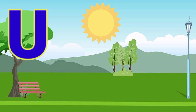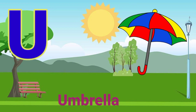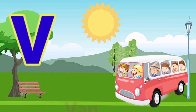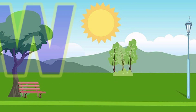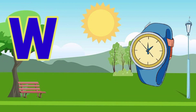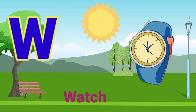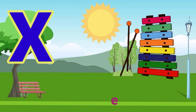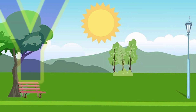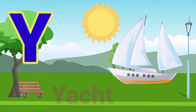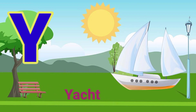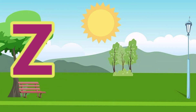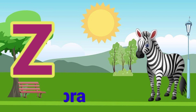U. U for umbrella. V. V for van. W. W for watch. X. X for xylophone. Y. Y for yacht. Z. Z for zebra.